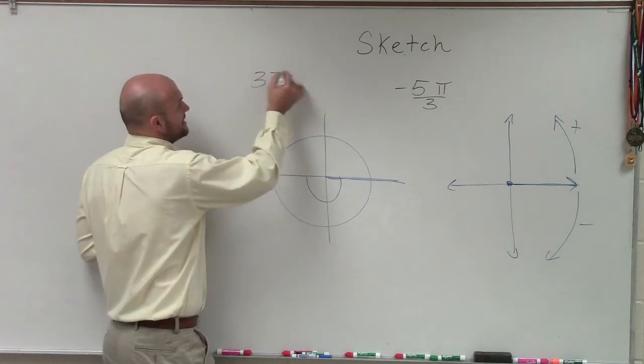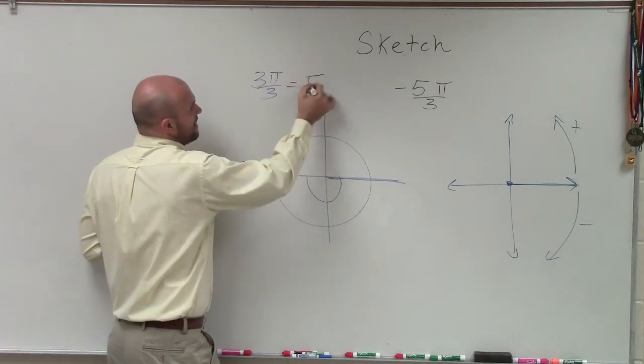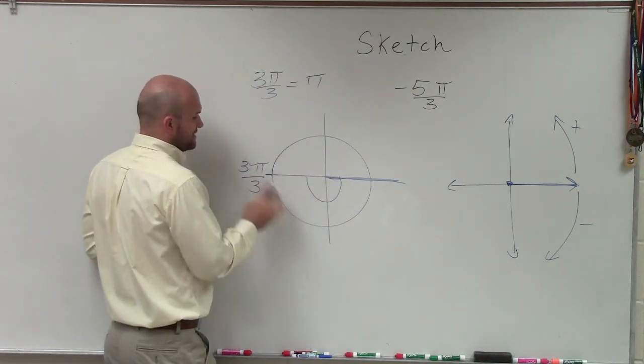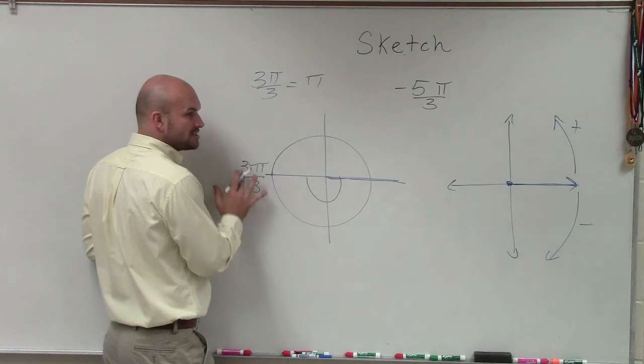3π over 3, that is the exact same value as π, because the 3's divide to 1, 1 times π is just still π. But what I like about that is I know that I have three parts of a whole.